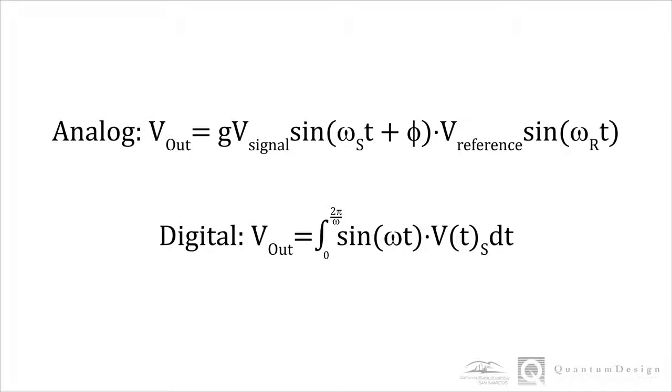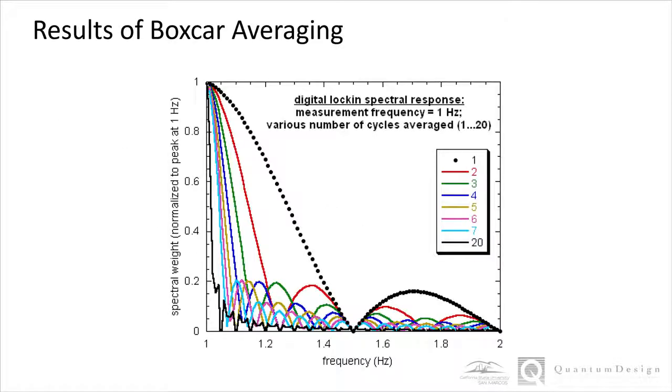This output is non-zero if the signal possesses the same frequency as the digital reference. The ETO filters noise via the use of boxcar averaging. Adjacent data points within a time window are averaged, and with increased averaging cycles, the spectral width of the ETO measurements is dramatically narrowed, thereby further reducing noise.